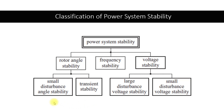Small disturbance angle stability is when a power system is subjected to a small fault or a small change and this brings instability in the angle. This is known as small disturbance angle stability, in which we are talking about small disturbances.